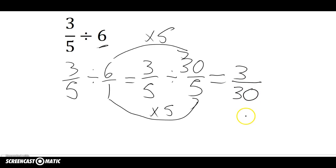And this is why three-fifths divided by six is equal to three over thirty, or one-tenth. I really have one-tenth of a group of six in three-fifths.